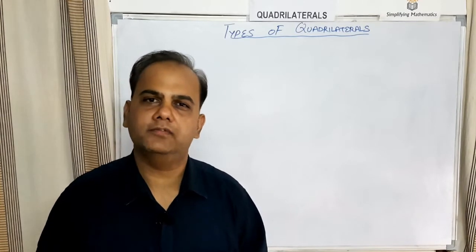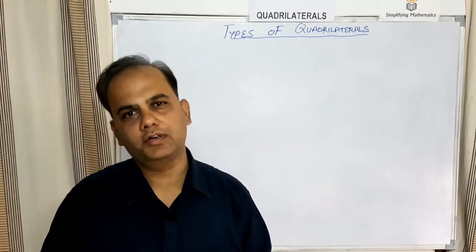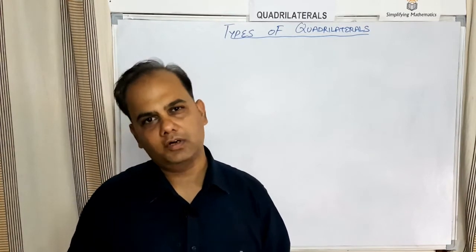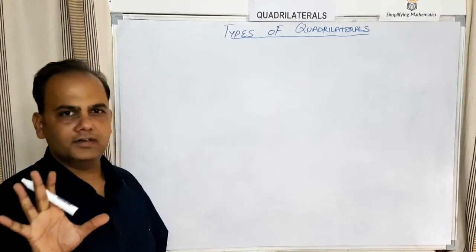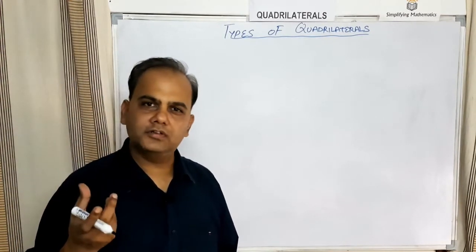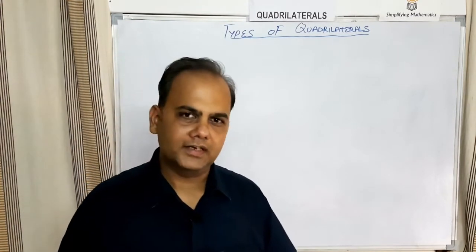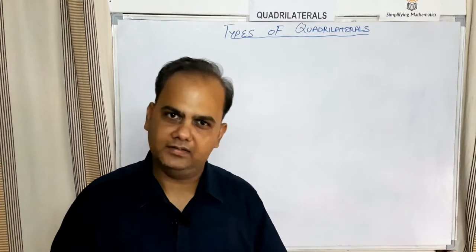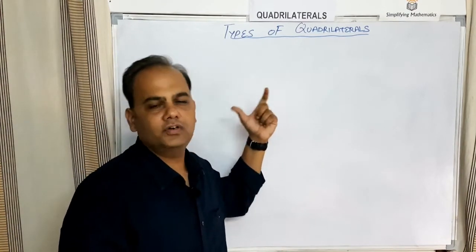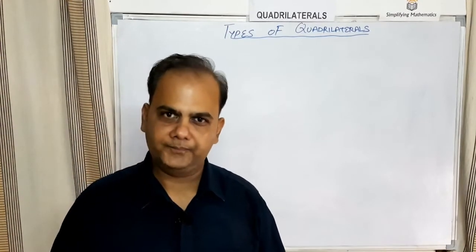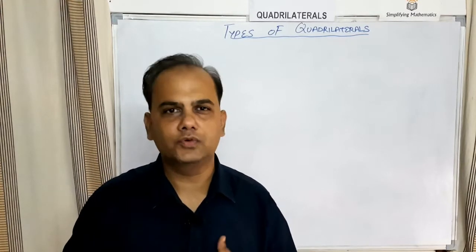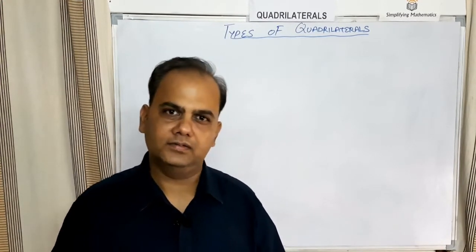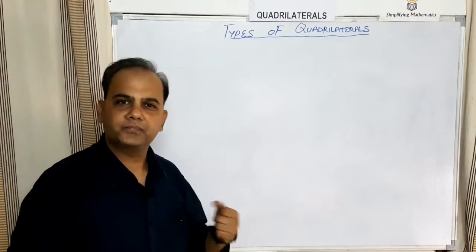Welcome to the class of Simplifying Mathematics. Today we are going to learn about various types of quadrilaterals. In part one of quadrilaterals, you learned the basic concepts and terminology. There are normally six types of quadrilaterals. The three main things studied are sides, angles, and diagonals. All quadrilaterals are four-sided polygons, and based on their sides and angles, six types are defined.